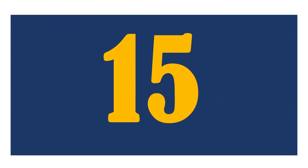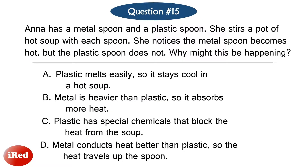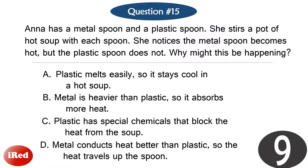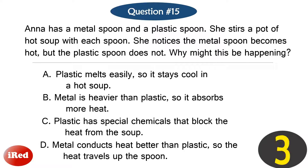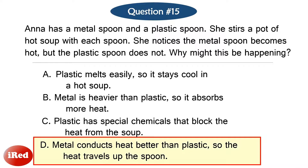Question number fifteen. Anna has a metal spoon and a plastic spoon. She stirs a pot of hot soup with each spoon. She notices the metal spoon becomes hot, but the plastic spoon does not. Why might this be happening? The correct answer is letter D, metal conducts heat better than plastic, so the heat travels up the spoon.